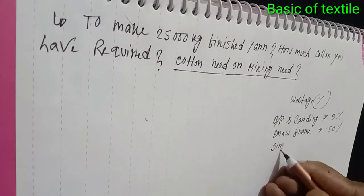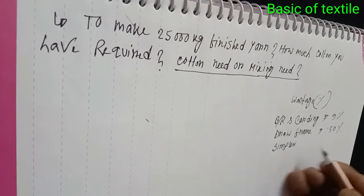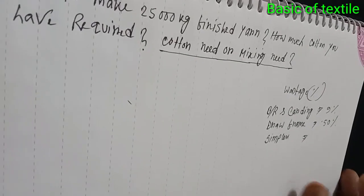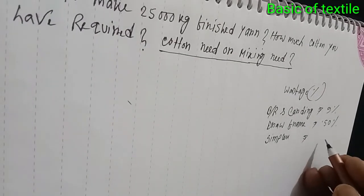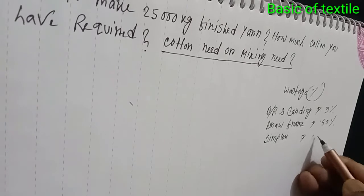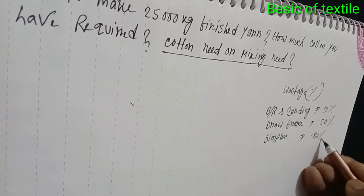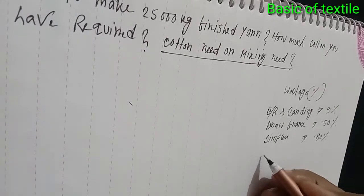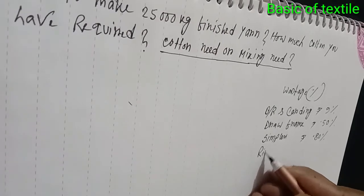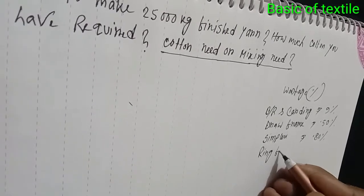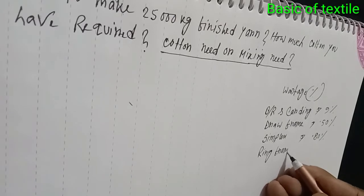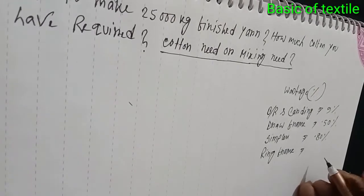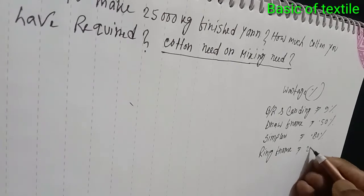Then Simplex — waste at Simplex is 0.80%. Then Ring Frame — waste at Ring Frame is 2%.